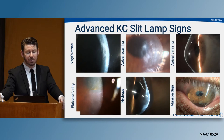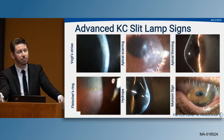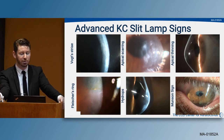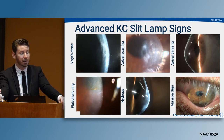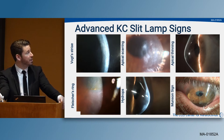We all know the advanced slit lamp signs we see with keratoconus: things like Vogt's striae, apical scarring, apical thinning, Fleischer's rings, and in situations where Descemet's tears, we end up with hydrops.